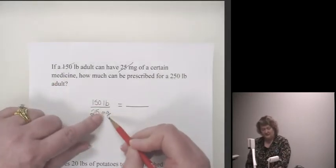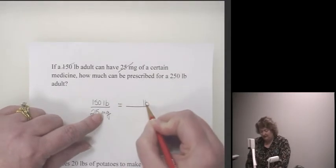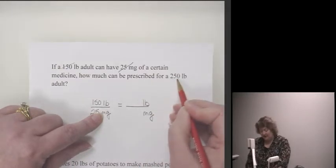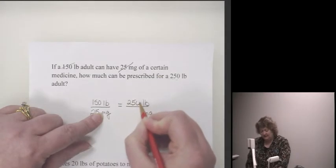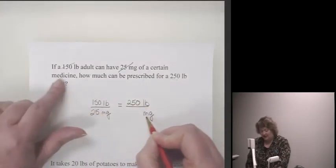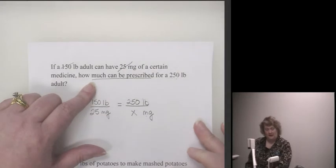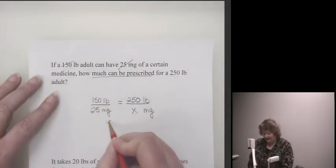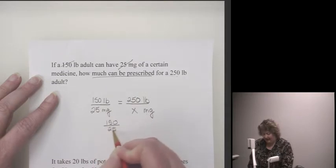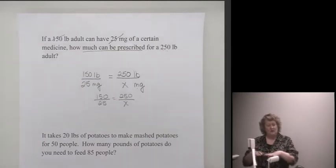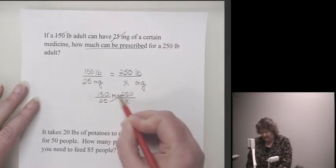How much can be prescribed for a 250 pound adult? Because my ratios have to be equal, on top over here needs to be pounds, and over here needs to be milligrams. What number do I have here is 250 pounds. So that 250 needs to go here, and how much can be prescribed is what I'm looking for. So that's going to be my x, or my unknown. Now when I'm solving that then, I've got 150 over 25 equals 250 over x. And now I have a proportion, and I can use that cross product being equal to solve it.